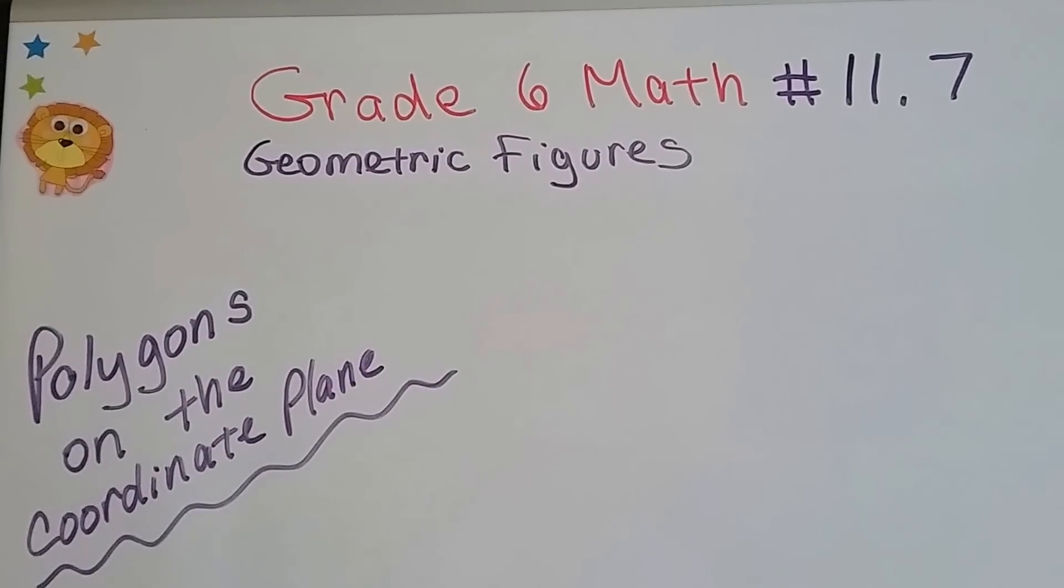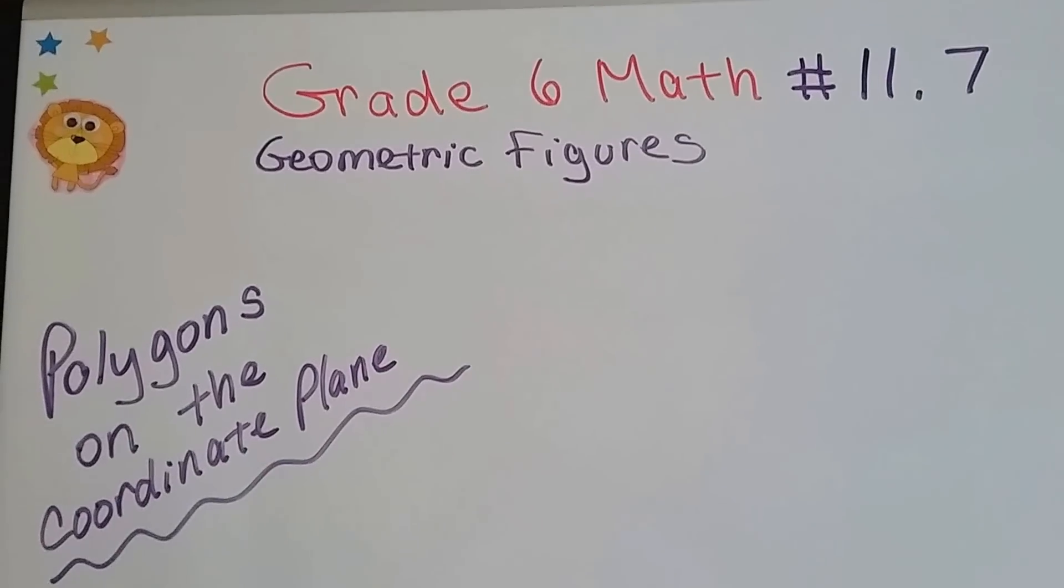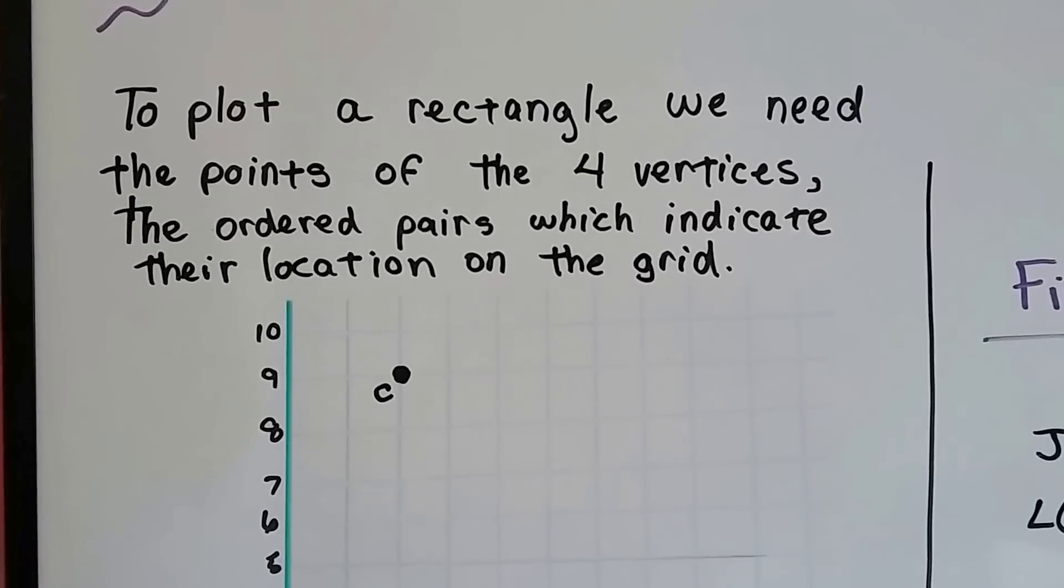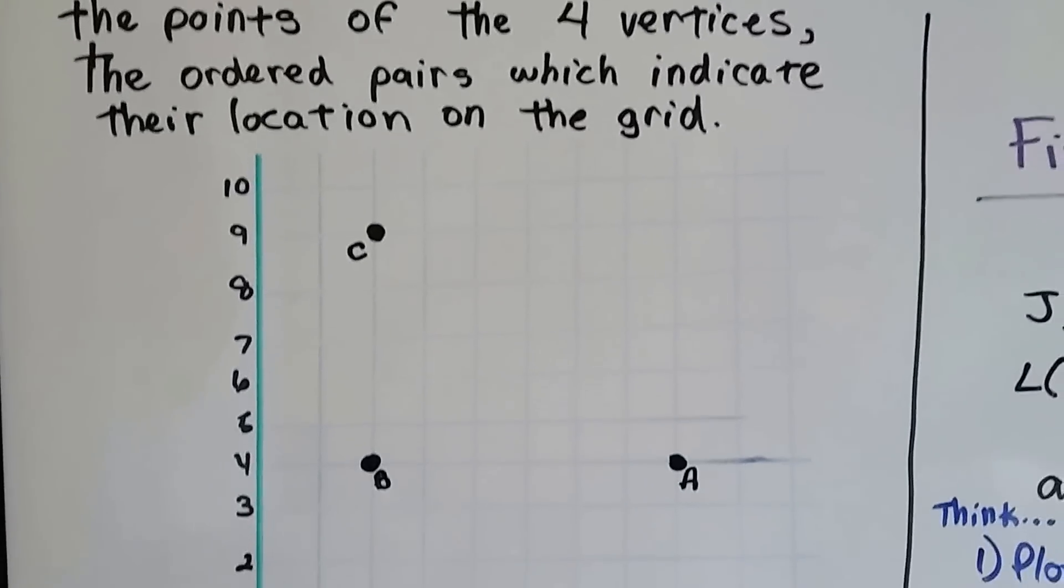Grade 6 math number 11.7, Polygons on the Coordinate Plane. To plot a rectangle, we need the points of the four vertices, the ordered pairs which indicate their location on the grid.